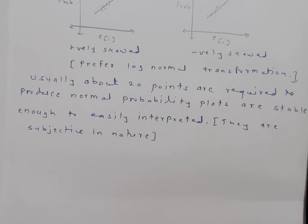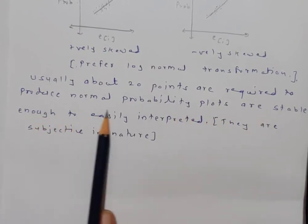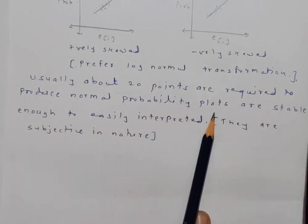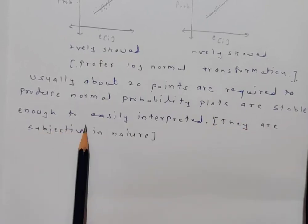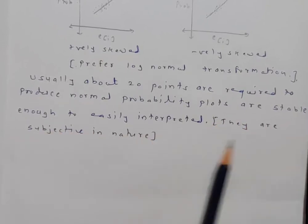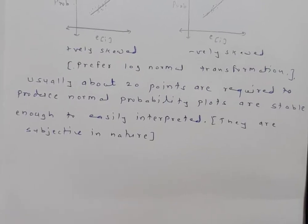Usually about 20 points are required to produce normal probability plots stable enough to be easily interpreted; they are subjective in nature. In today's lecture we saw what is the PRESS residual and, from the residual plots, we covered the normal probability plot. Thank you.